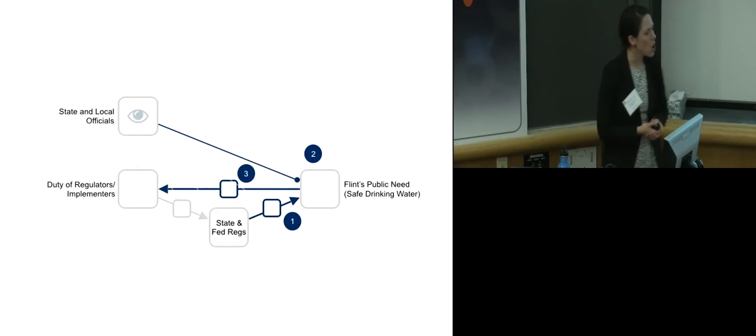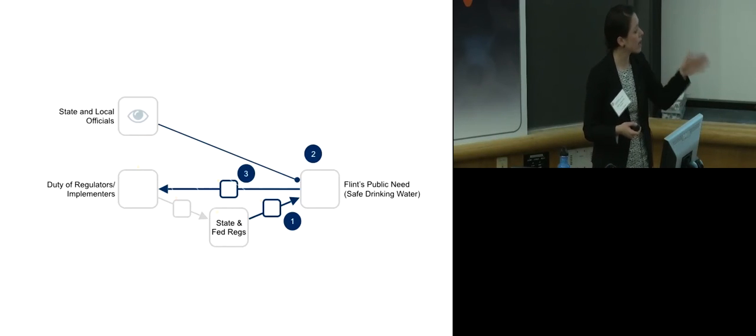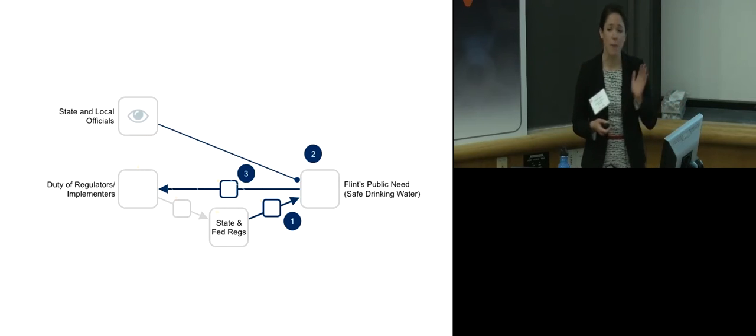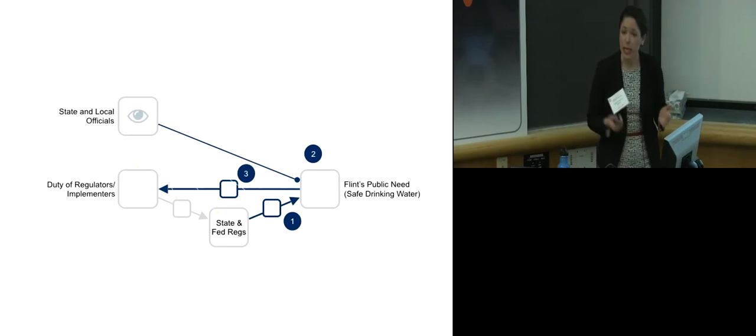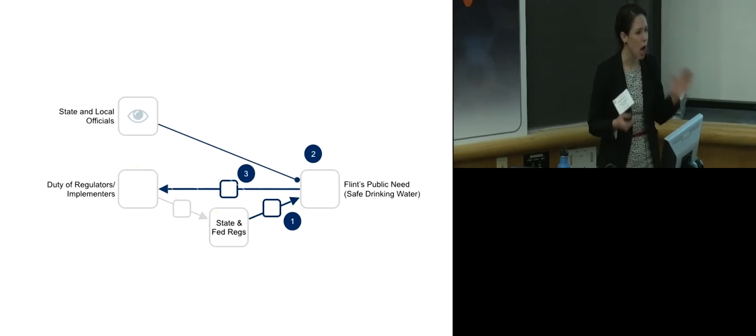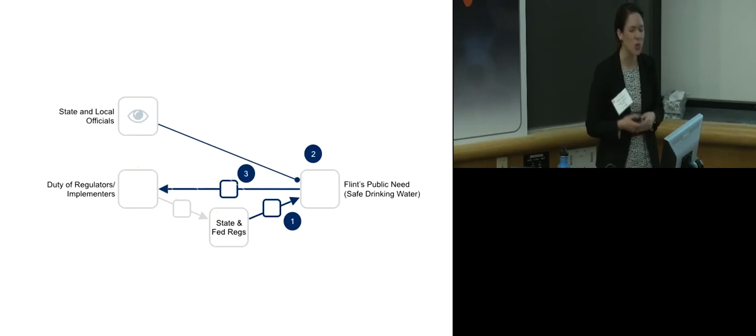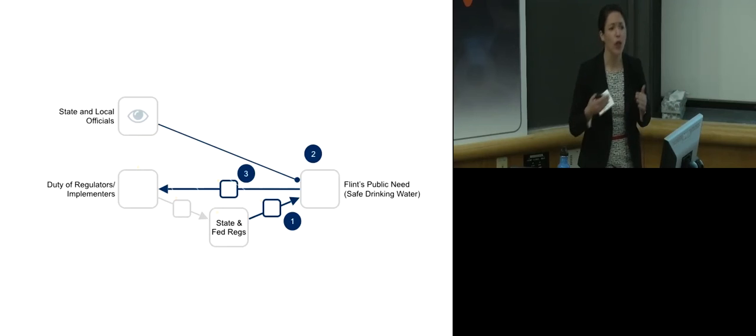First, we need to strengthen the causal relationship between state and federal regulators, the state and federal requirements, and the public needs of water quality. Currently, EPA is updating the lead and copper rule in making sure this causality is strengthened. Second, we need to expand the perspective of regulators to improve the actual water quality, the actual public needs. And if this isn't met, third, we need to have a feedback mechanism in place to allow them to take into account what is happening.